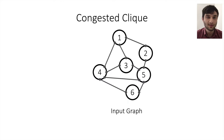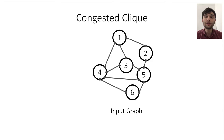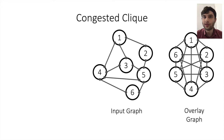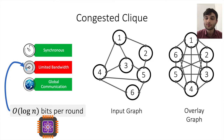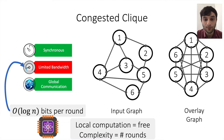For distributed subgraph existence, we work in the congested clique model. In the congested clique, we're given some input graph where every single node has an ID between 1 and n. Every node is a computation device that gets its neighboring edges as input. We have an overlay graph allowing nodes to communicate, where every two nodes can send log n bits to one another every single round in a synchronous network. What we try to minimize is the number of rounds it takes to solve a problem. Local computation is free; we only pay for the number of communication rounds.